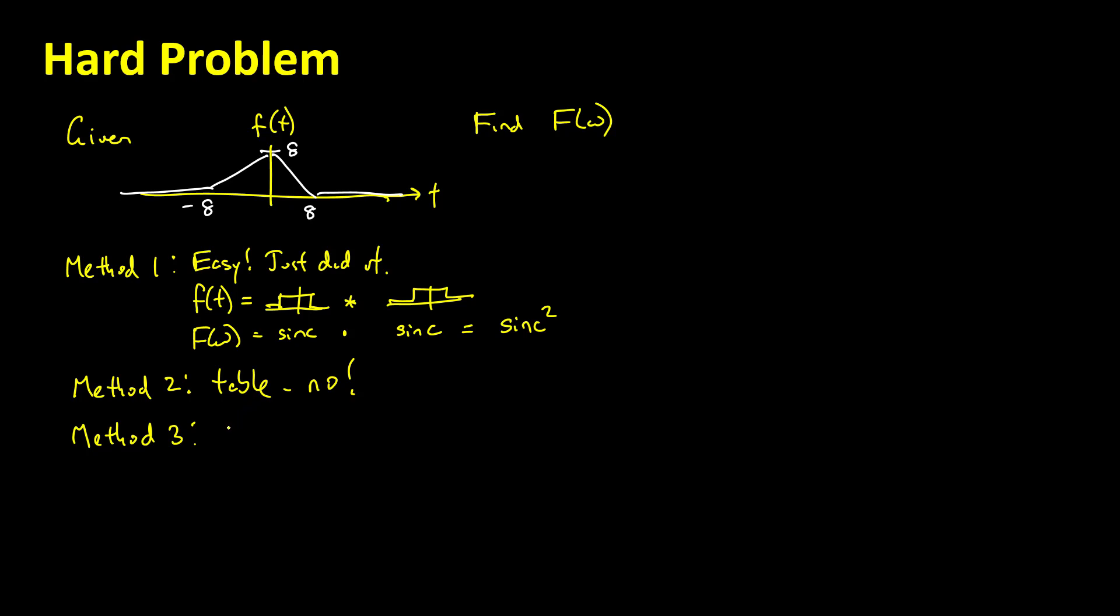I guess we could do the integral definition. We know that F of omega is always equal to the integral, just by definition, of f of t times e to the minus j omega t dt. And we just have to substitute in our f of t, which is equal, piecewise, to t plus 8 if t is less than 0, and minus t plus 8 for t greater than or equal to 0. We can substitute that into here and we'd have two different integrals.